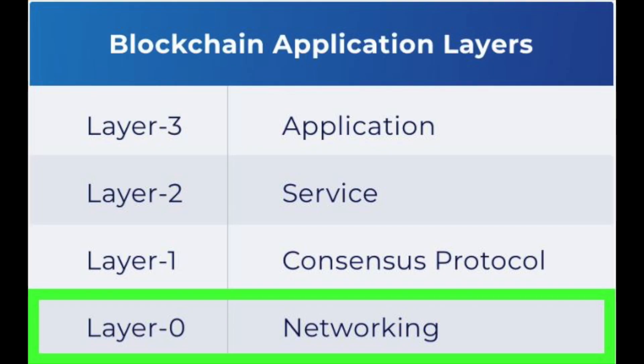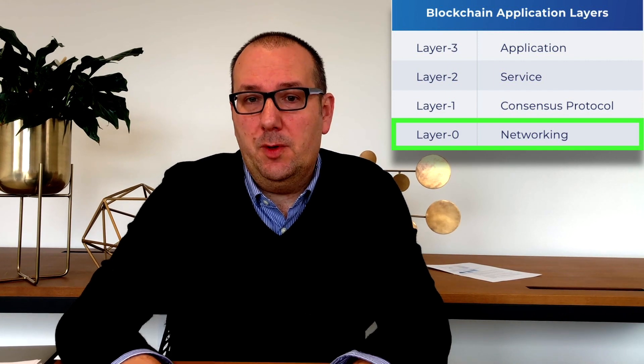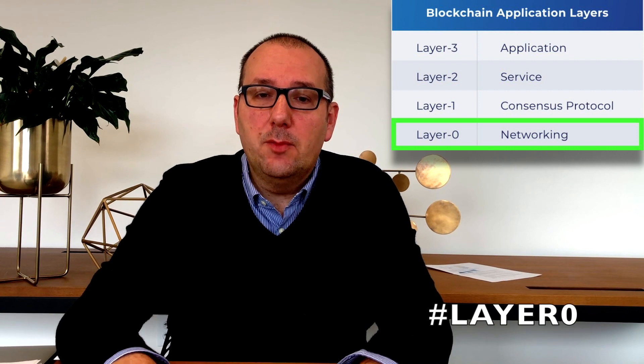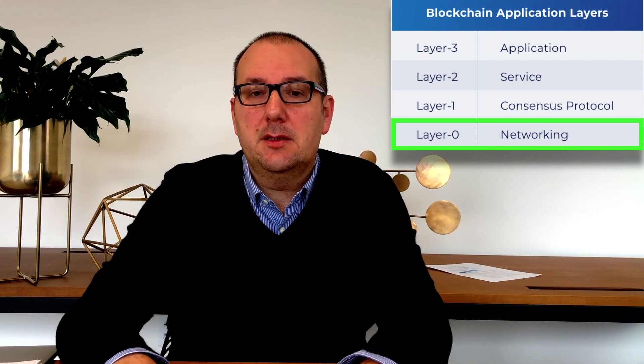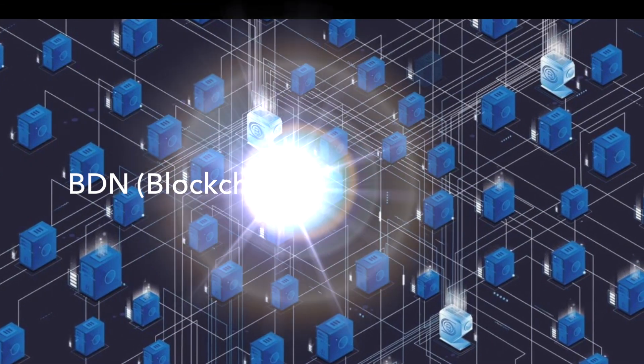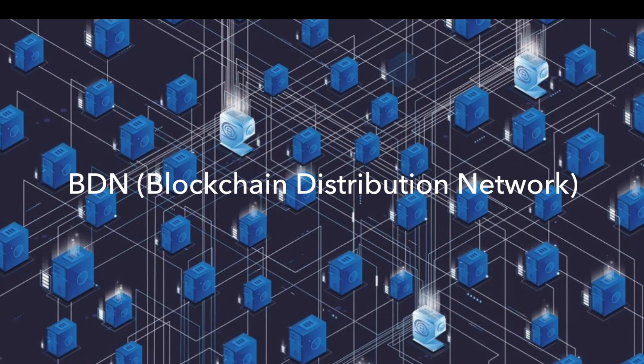Now let's circle back to the very bottom — the network layer. It's often overlooked when people talk about blockchains, but that's a huge mistake. This layer is the most important because it decides how data is transported and received on the peer-to-peer network. This is where Bloxtroute's Blockchain Distribution Network, or BDN, operates. Click this link here to learn about the BDN.